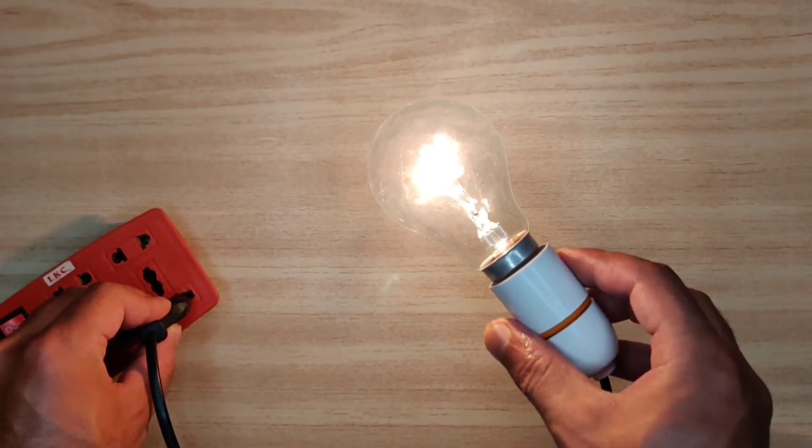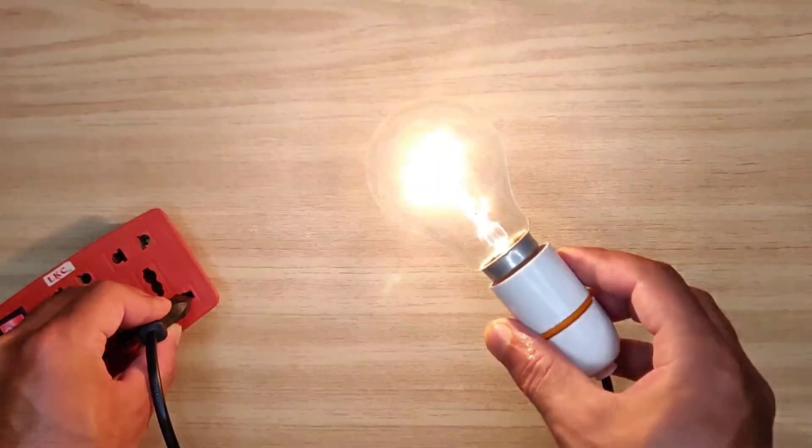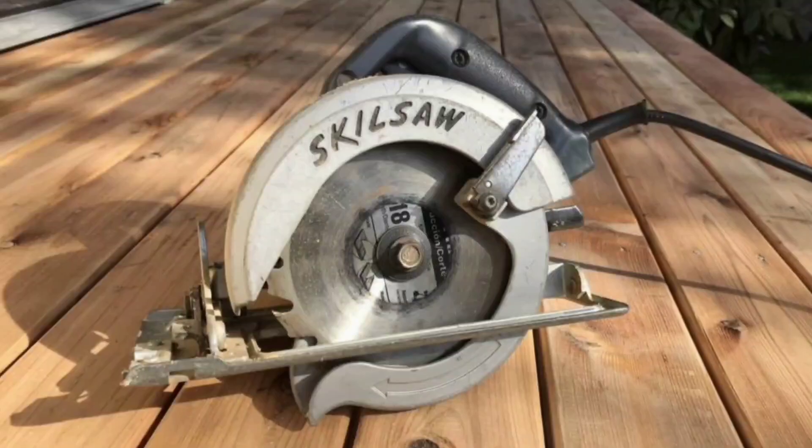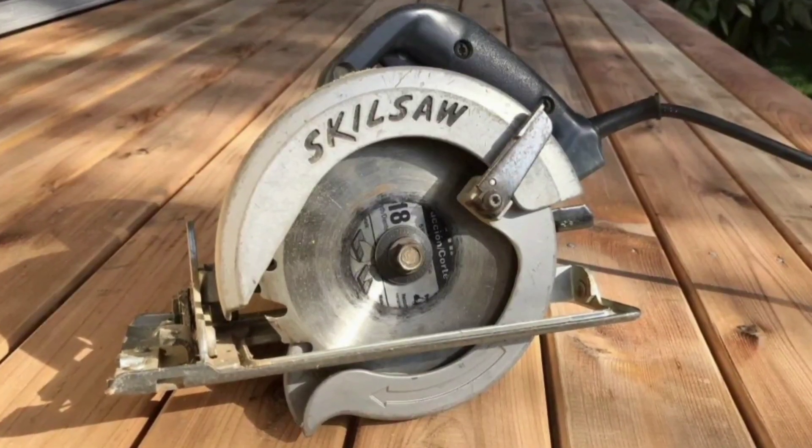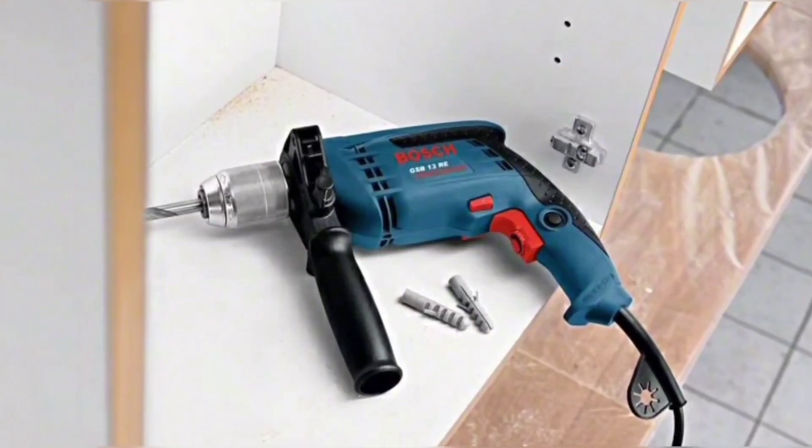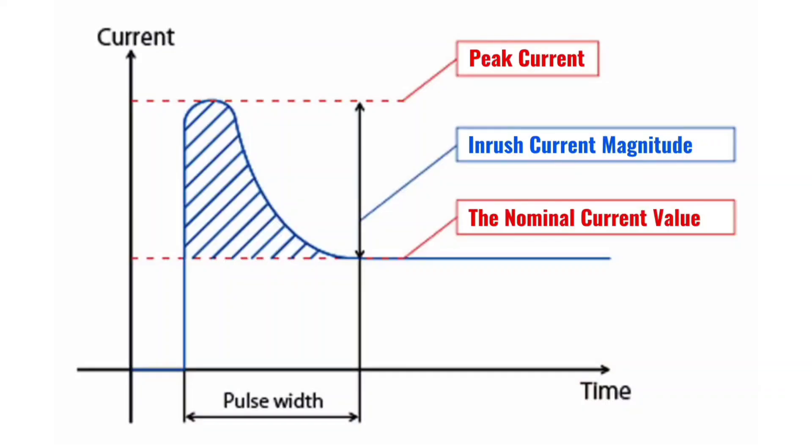You see the bulb also starts with peak initial brightness and then it stabilizes. Also the inductive loads that we use in daily life pull a huge amount of initial current than the nominal, and this initial current is actually what we call the inrush current.